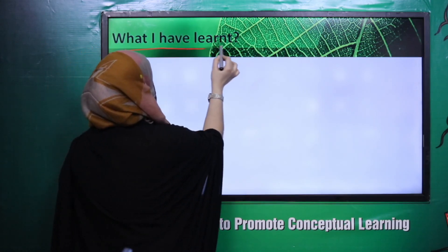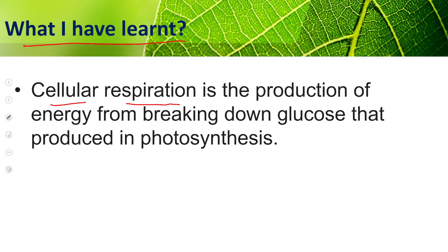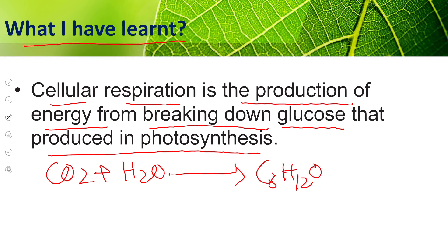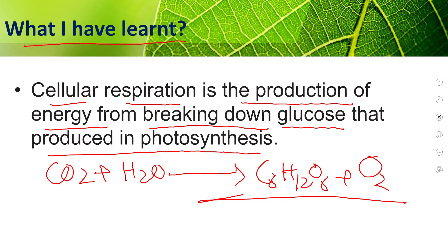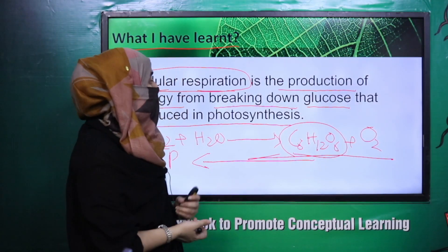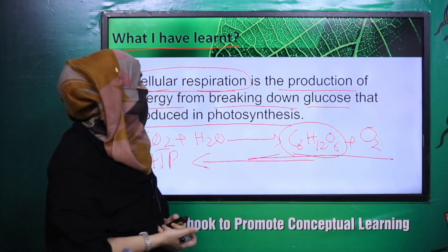Let us see what we learned today. Cellular respiration is the production of energy from breaking down glucose that was produced in photosynthesis. In photosynthesis, carbon dioxide and water combine to form sugar molecules and oxygen. Those sugar molecules made during photosynthesis are then broken down by the plant to produce energy in the form of ATP — that is cellular respiration.